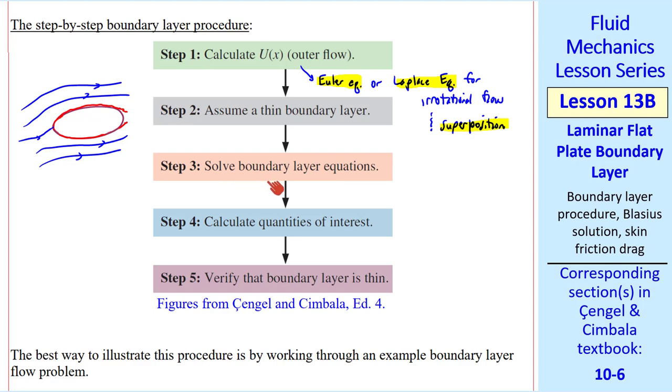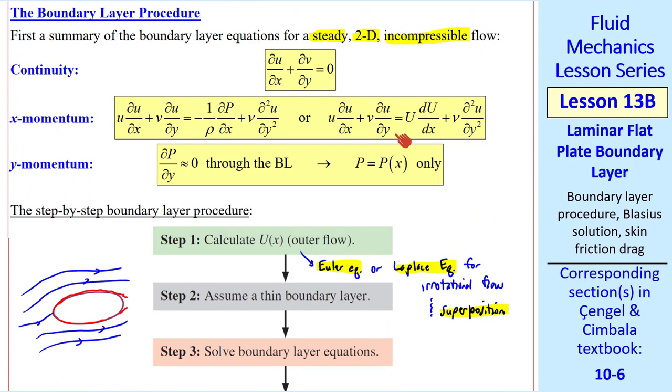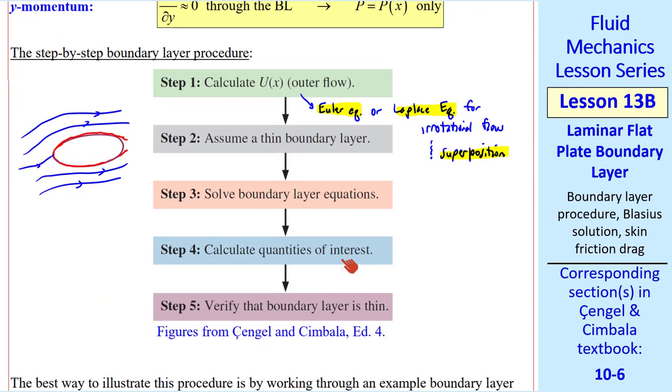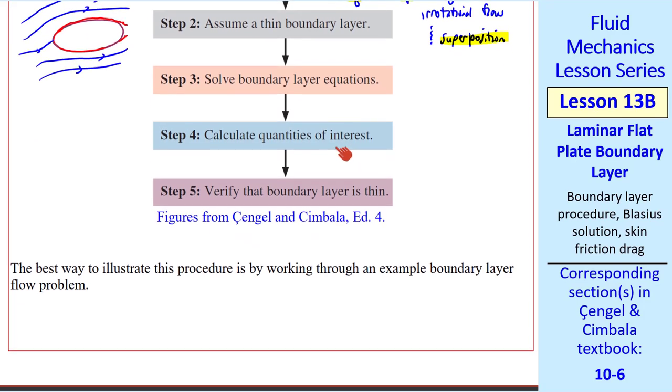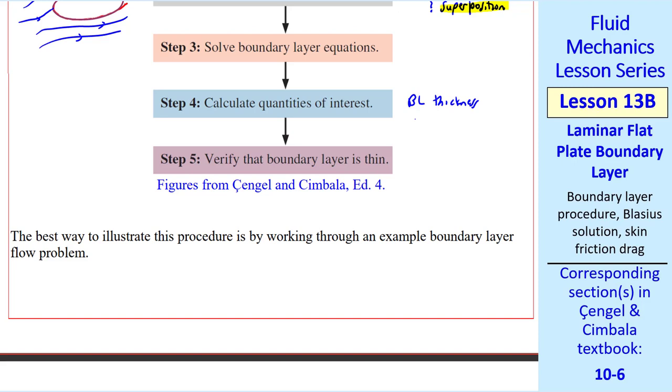Step 3 is to solve the boundary layer equations. We plug our capital U of X into this equation and solve these two equations simultaneously. Once we've solved the boundary layer equations, step 4 is to calculate quantities of interest, such as boundary layer thickness, the skin friction drag on a body, etc.